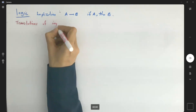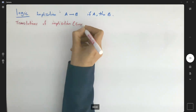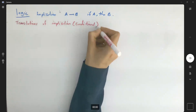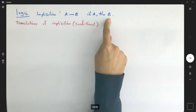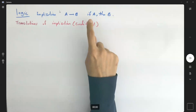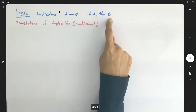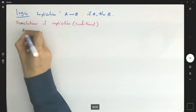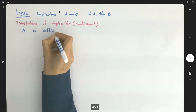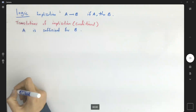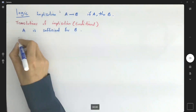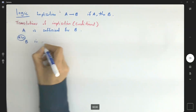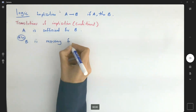Translations of implication or conditional statements. If a then b — if hypothesis a then conclusion b — can be written as 'a is sufficient for b.' They can also say that 'b is necessary for a.'